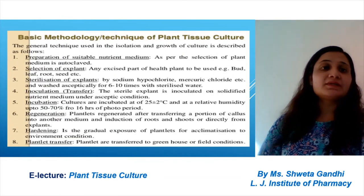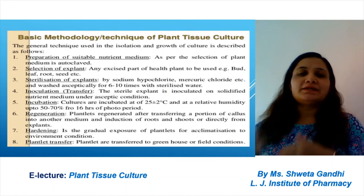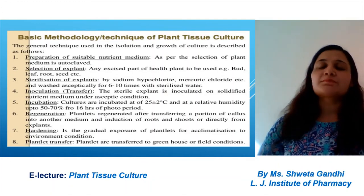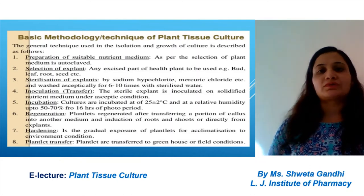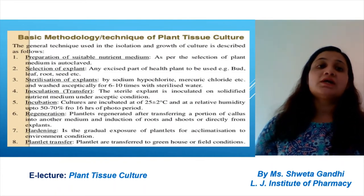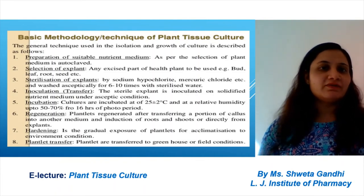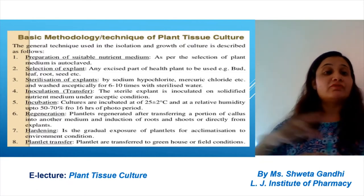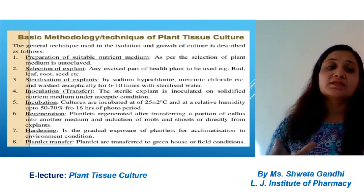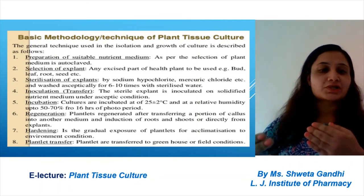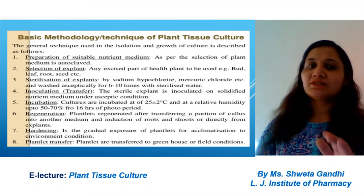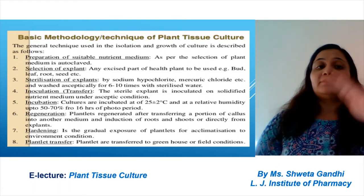Proper temperature should be maintained. Plant growth regulators include auxin, cytokinin, and gibberellin. The basic methodology for plant tissue culture: prepare a suitable nutrient medium, select the explant, sterilize the explant, inoculate, then incubation period of one to six weeks, then regeneration. After regeneration these plantlets are transferred to the greenhouse or the field.